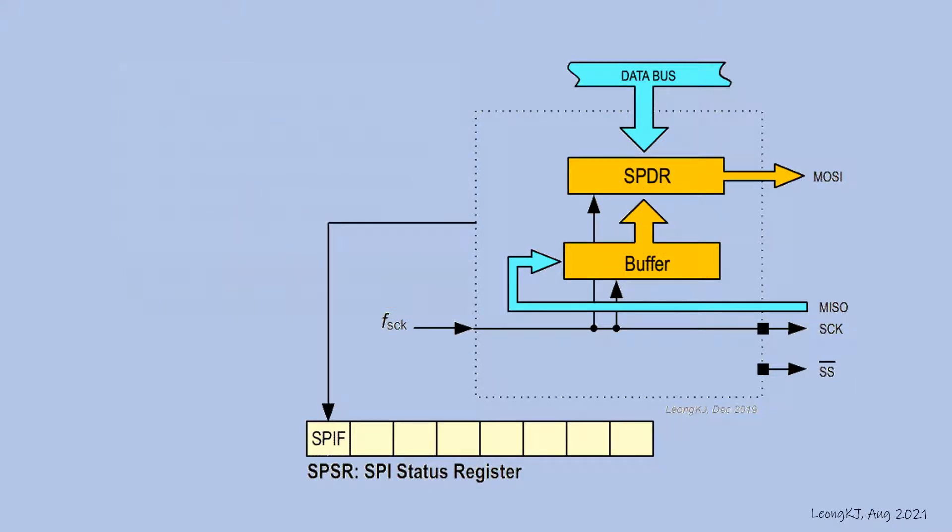To initiate a data transfer, send the data to the SPDR register. This C instruction sends the data hex 34 to the SPDR register.